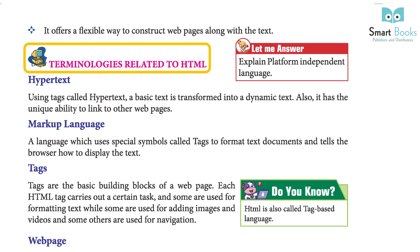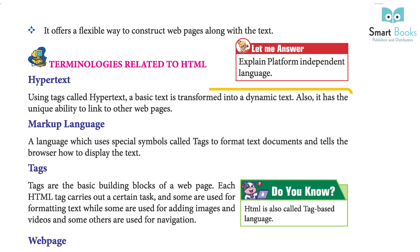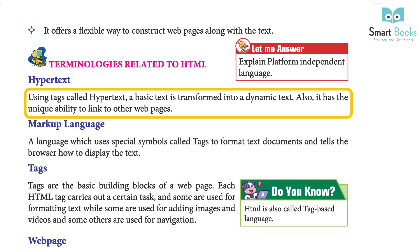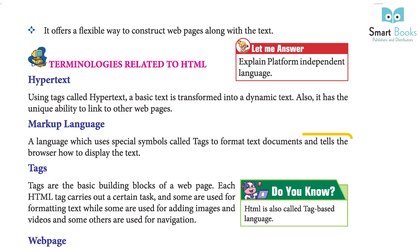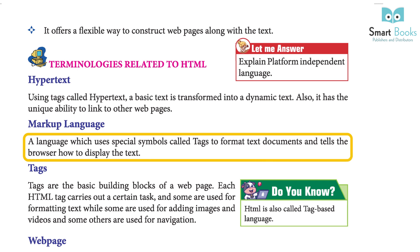Terminologies related to HTML: Hypertext – using text called hypertext, a basic text is transformed into dynamic text. It also has the unique ability to link to other web pages. Markup Language – a language which uses special symbols called tags to form a text document and tells the browser how to display the text.